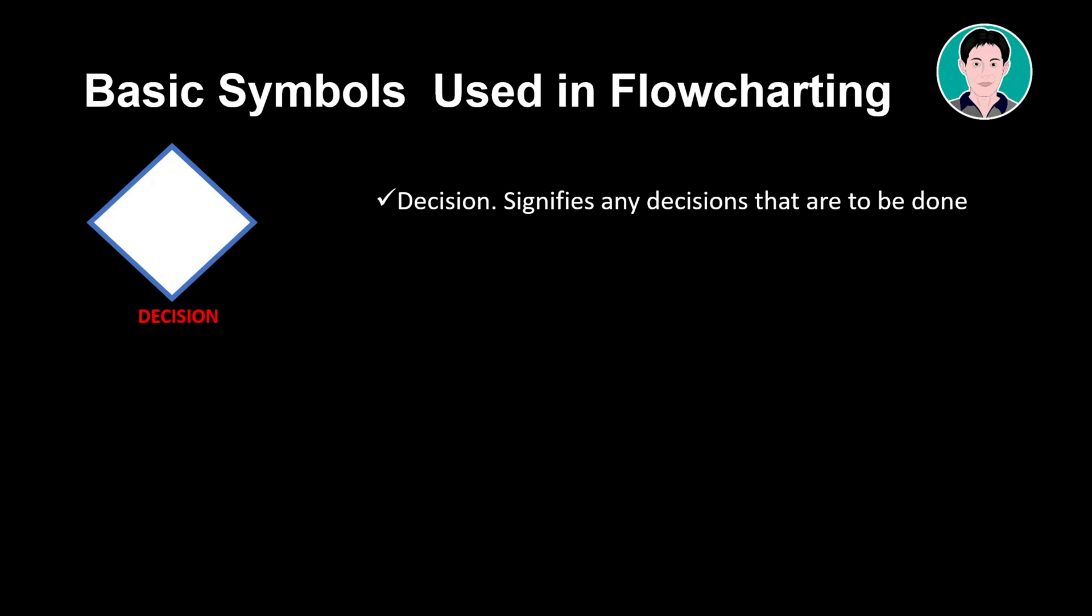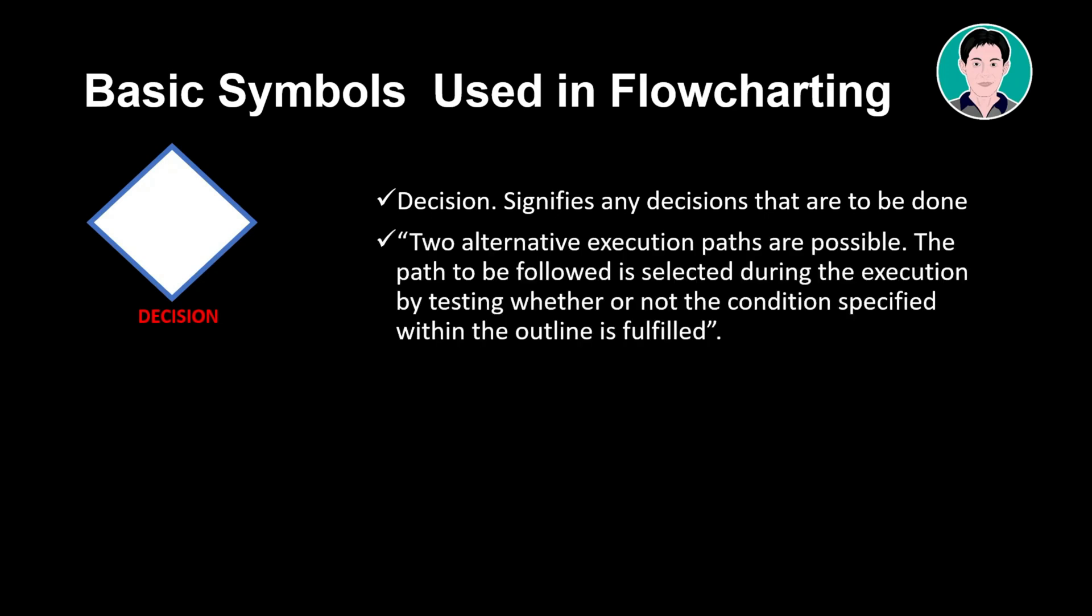Decision. Signifies any decisions that are to be done. Two alternative execution paths are possible. The path to be followed is selected during the execution by testing whether or not the condition specified within the outline is fulfilled.